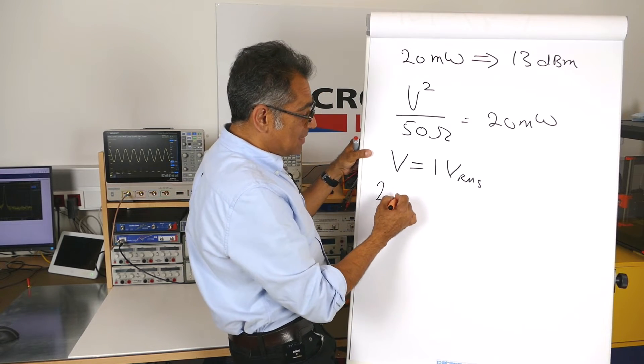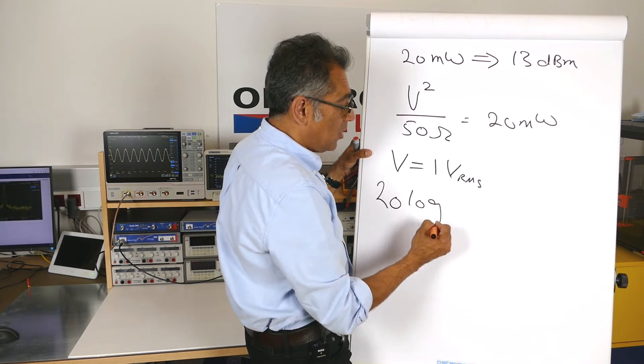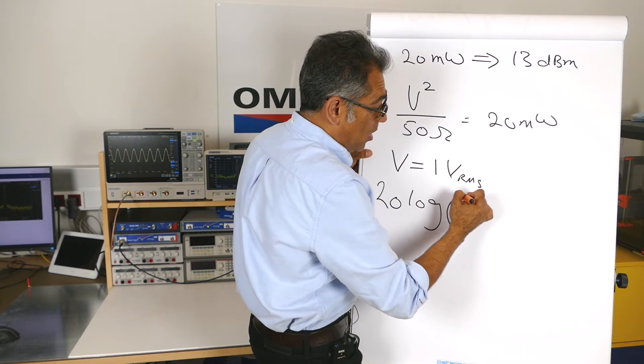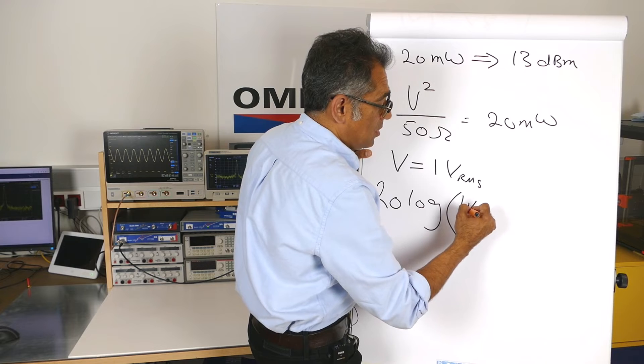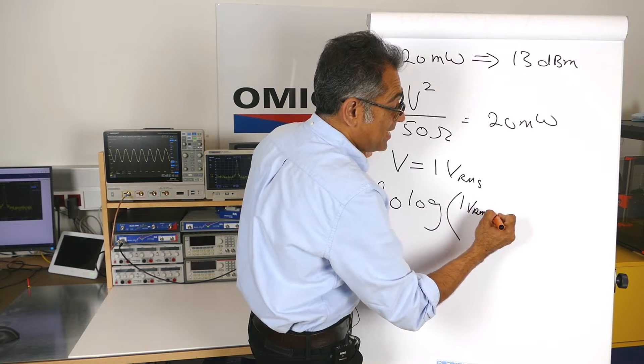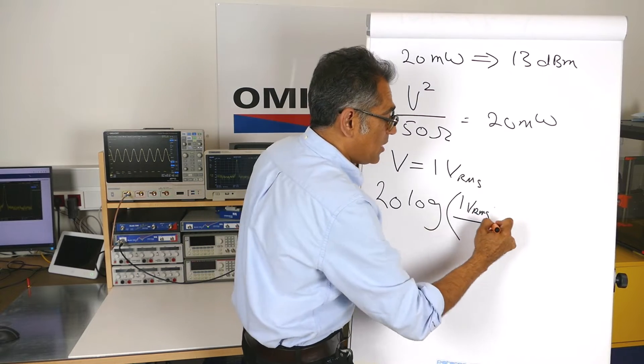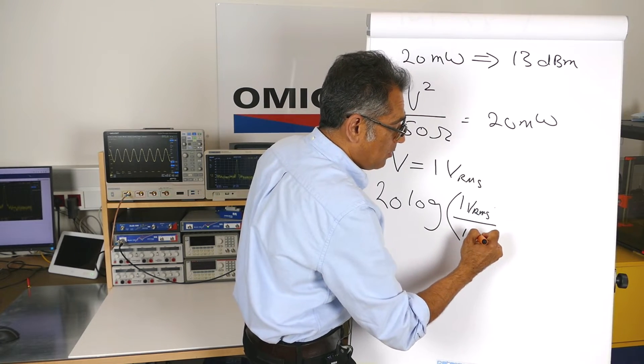Again, all that means is that you have got 20 log of the voltage, in our case it's going to be 1 volt RMS.